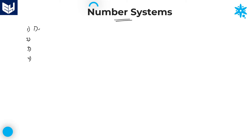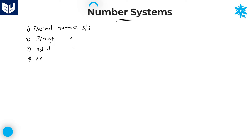The first one is decimal number system. The second one is binary number system. The third one is octal number system, and the fourth one is hexadecimal number system. So these are the four different types of number systems that we have in this topic.